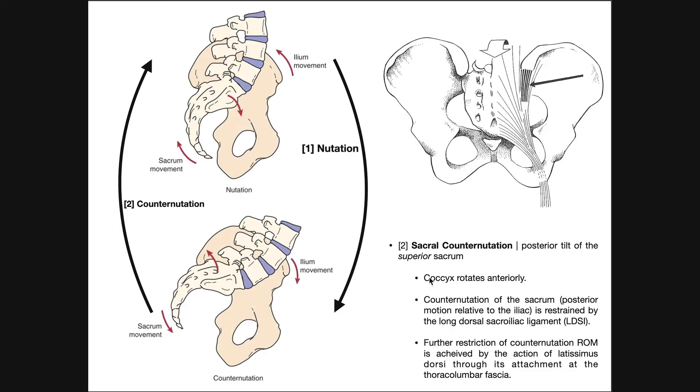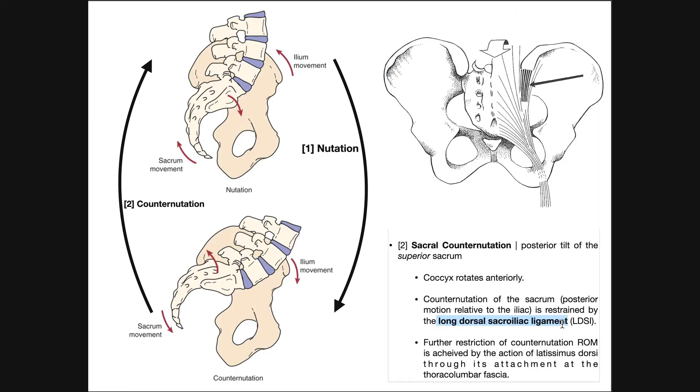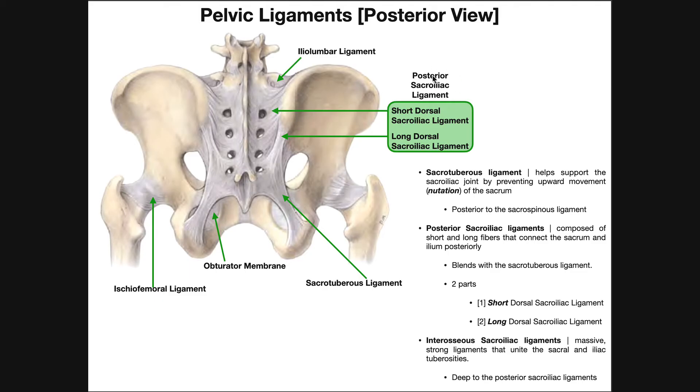Now in terms of sacral counter-nutation, it's restricted mainly by the long dorsal sacroiliac ligament. Remember, this was one of the two ligaments that was part of the posterior sacroiliac ligament. Right here, this is the long dorsal sacroiliac ligament.